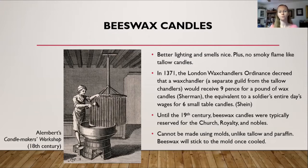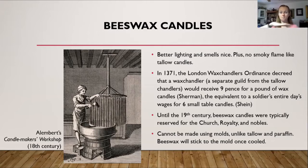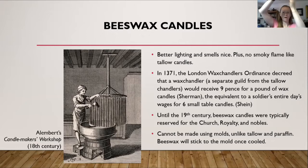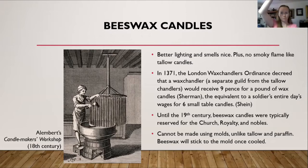Only the church and royalty could afford paying for beeswax candles. Beeswax cannot be used in molds unlike tallow or paraffin candles — the beeswax will stick to the mold once cooled. Because of that, beeswax candles can only be made one of two ways. In the picture here, you can see a wheel with strings hanging down. The wheel spins over a bucket, and you take a cup and pour the wax down a string, then move the wheel and pour down the next string. This is one way of making the candles — by pouring the wax down the string.